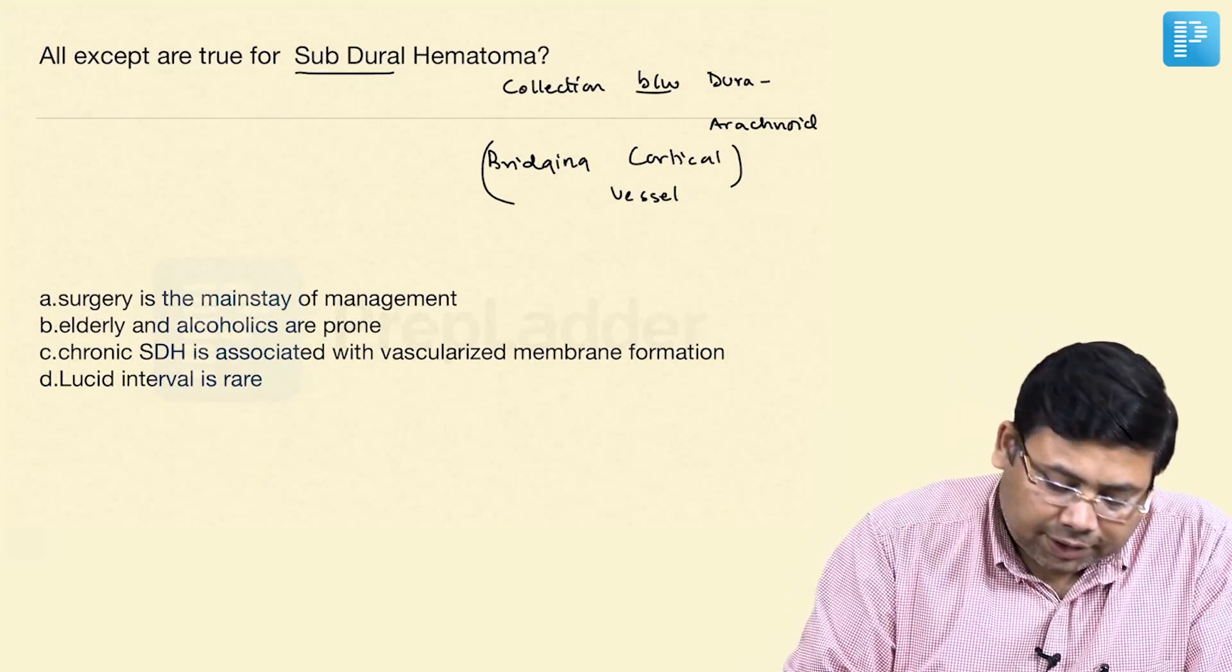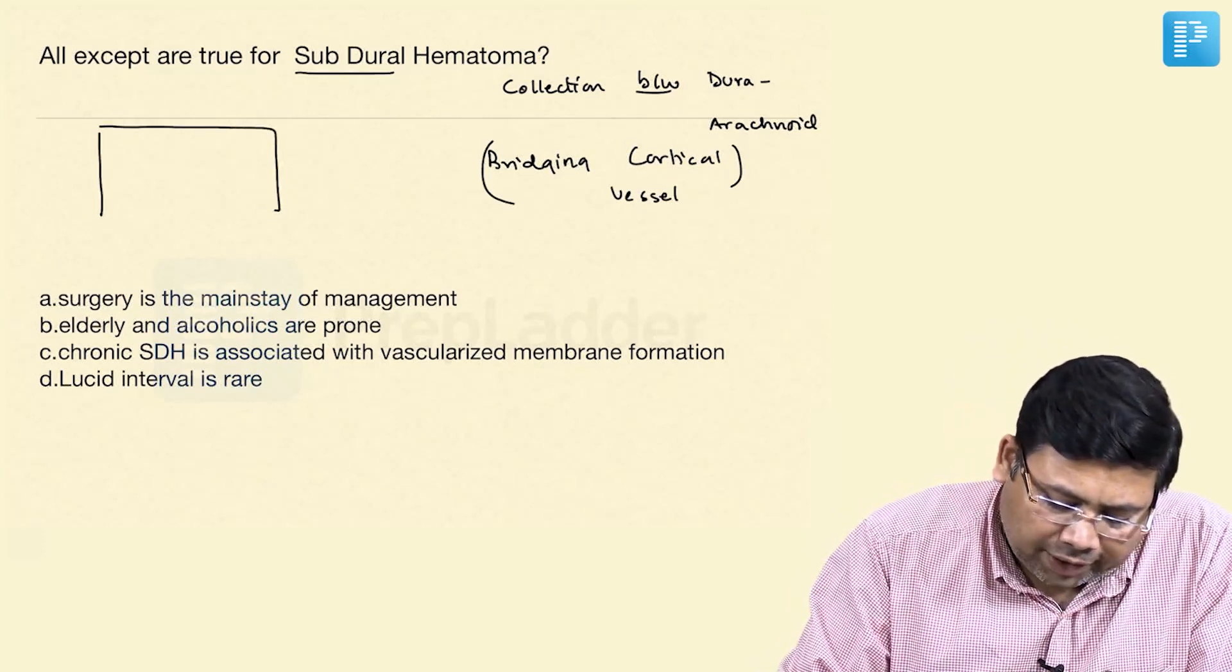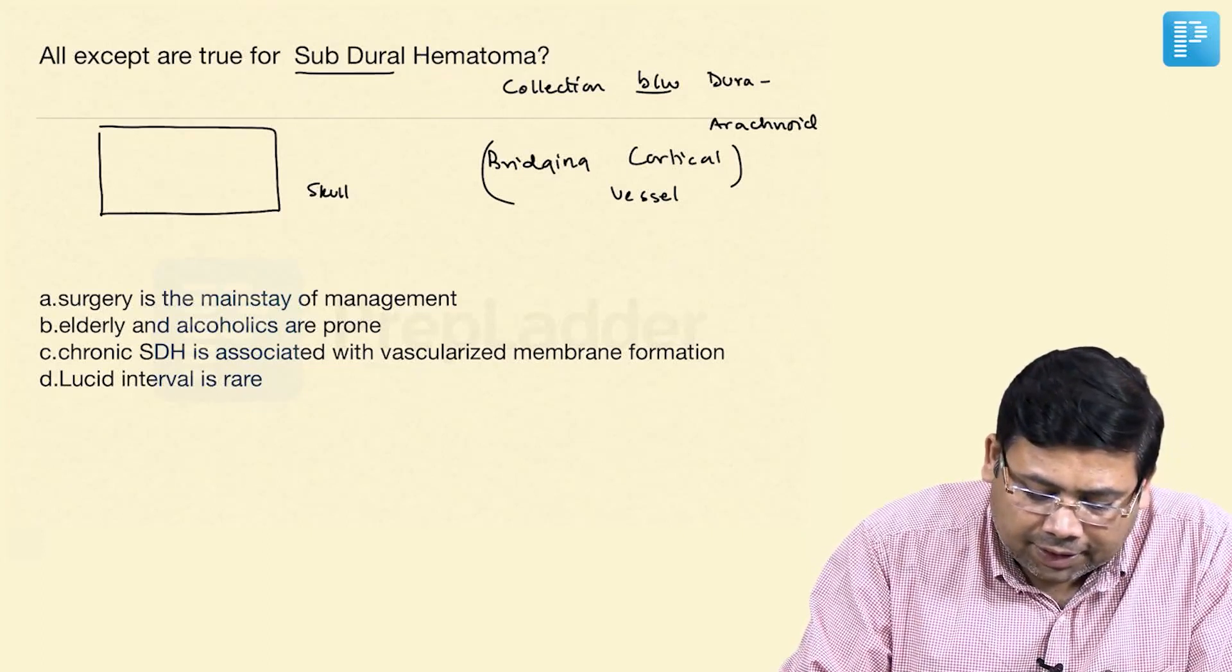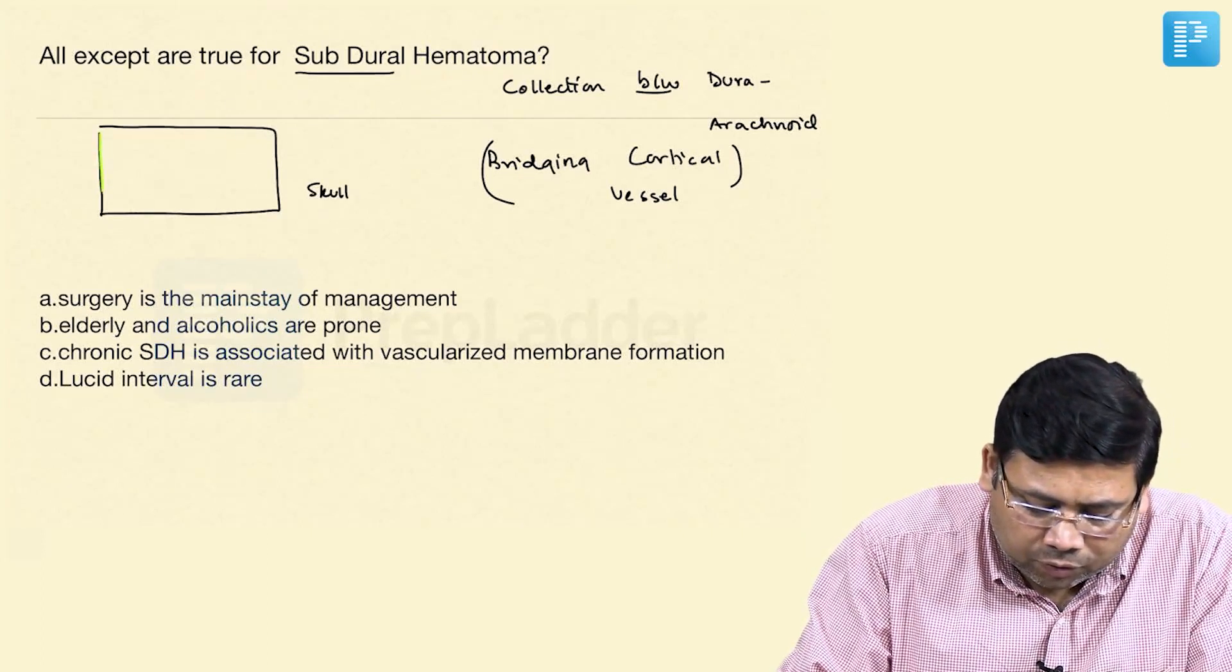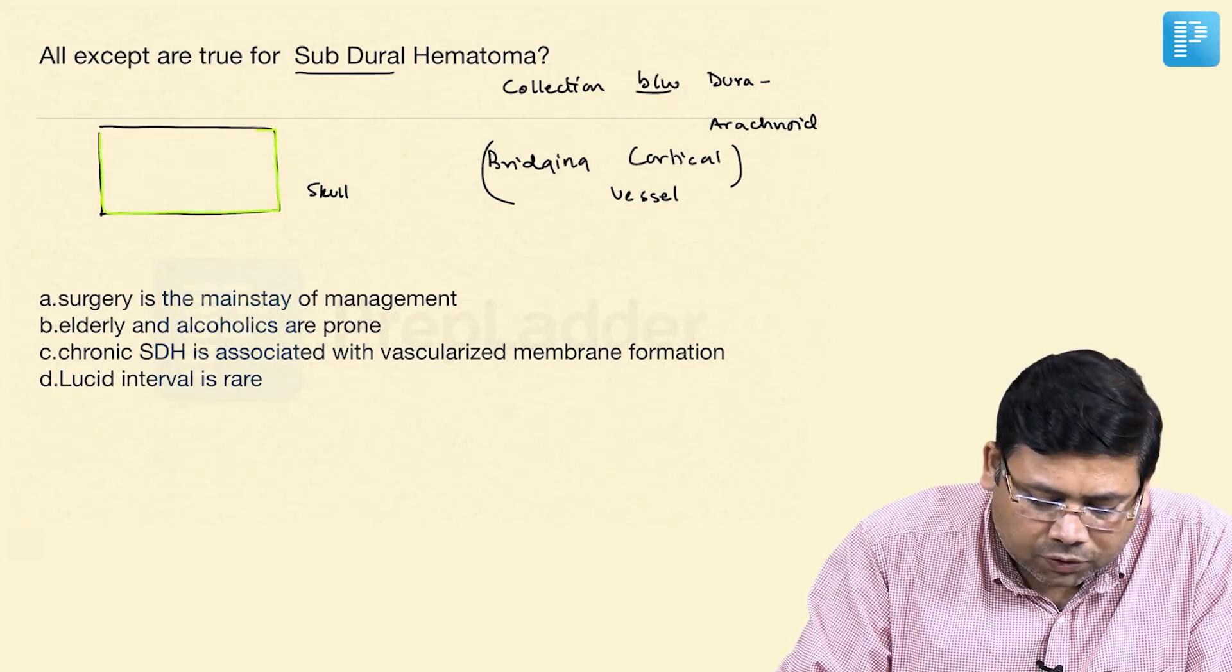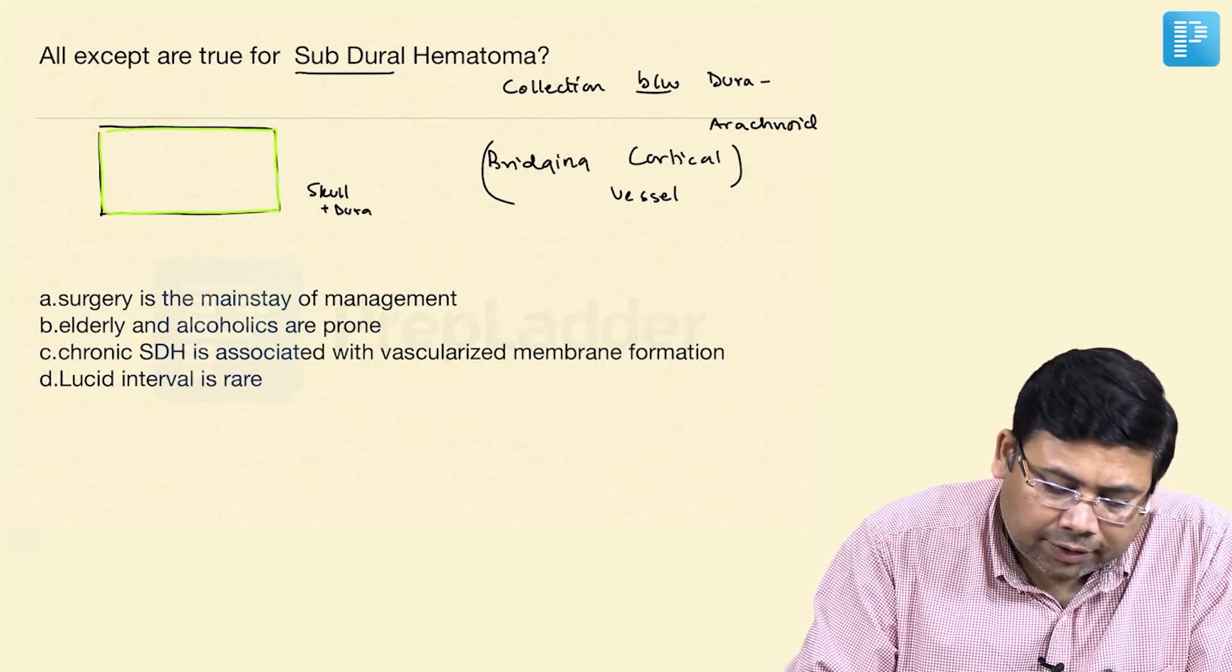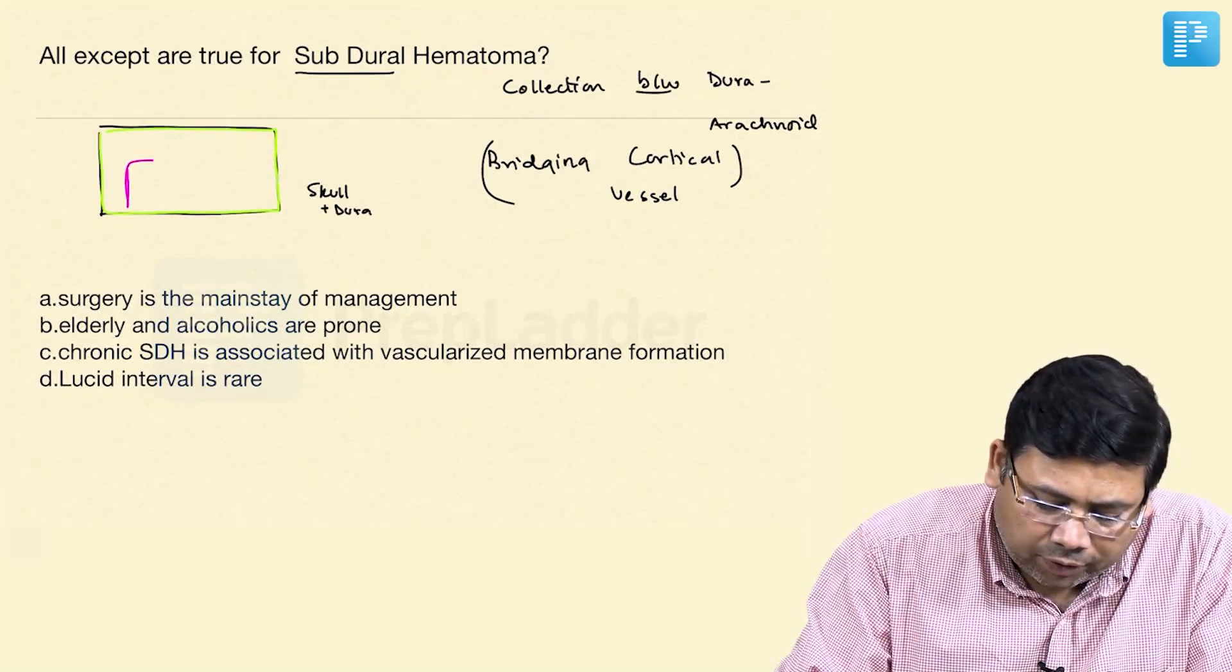Now, why this happens? You need to understand. If you take this as skull, you have to understand that skull and dura, they are totally fused together. So, skull plus dura is fused and then you have the arachnoid here.